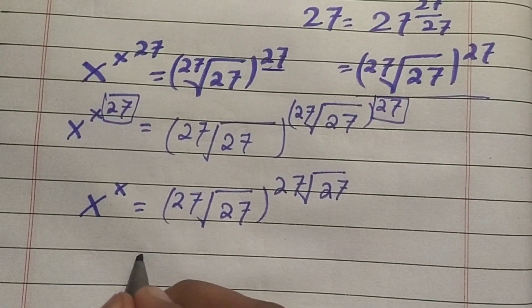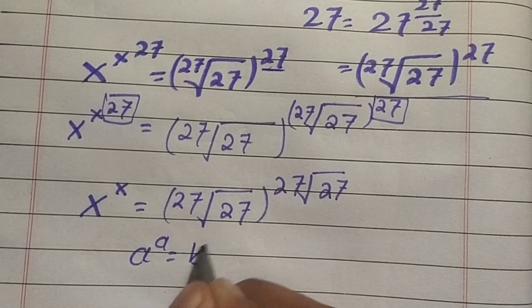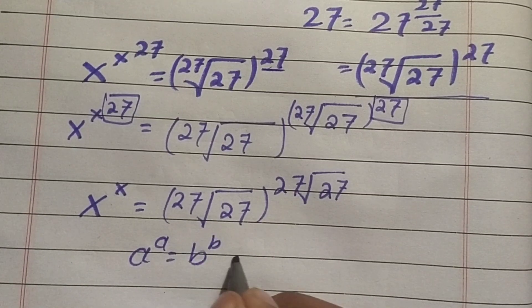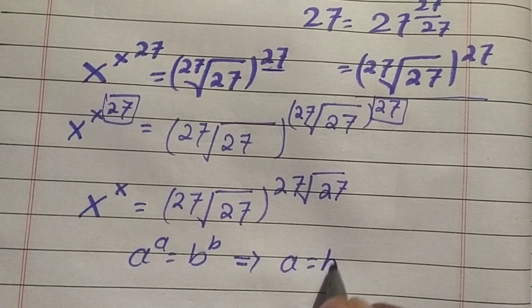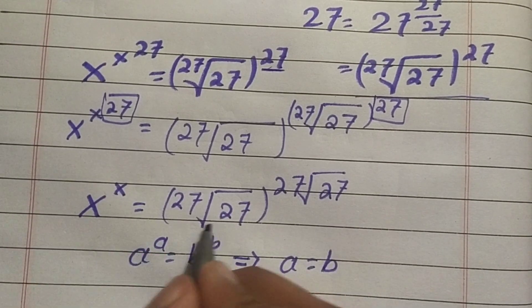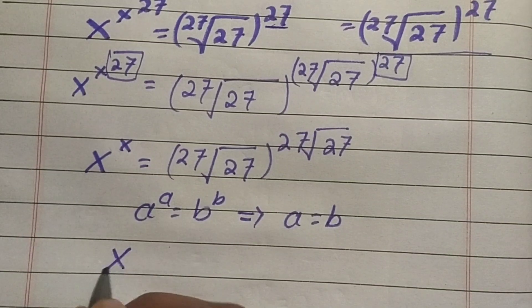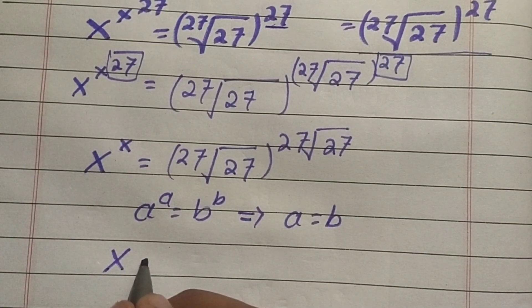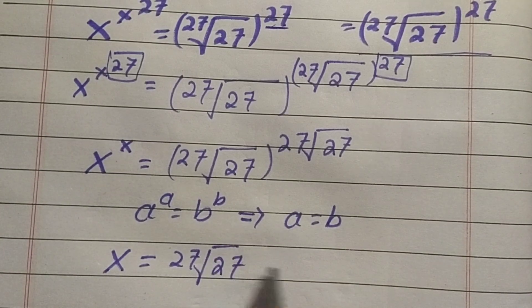We have the property that a^a = b^b implies a = b. Comparing the bases here, x equals the 27th root of 27.